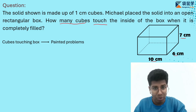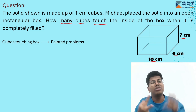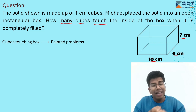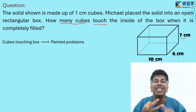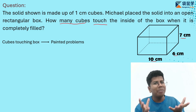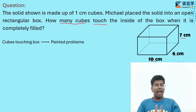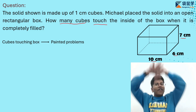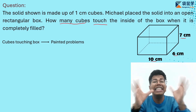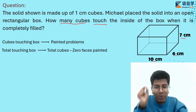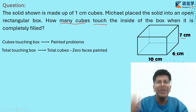To find how many cubes touch the box, we'd need to calculate 3-face, 2-face, and 1-face touching cases separately, which is challenging. Instead, we think in reverse: take the total number of cubes and subtract the cubes that don't touch the box — that is, the 0 faces painted (inner) cubes. So: cubes touching the box = total cubes minus zero-faces-painted.